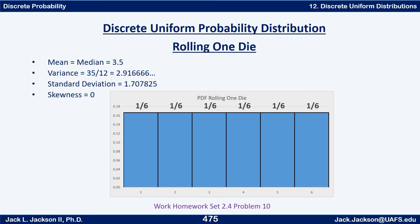The mean and the median are actually both 3.5. If you just do a regular average of 1, 2, 3, 4, 5, and 6 you get 3.5, or if you do it the weighted way — 1 times 1/6 plus 2 times 1/6 plus 3 times 1/6 and so forth — you still get 3.5.